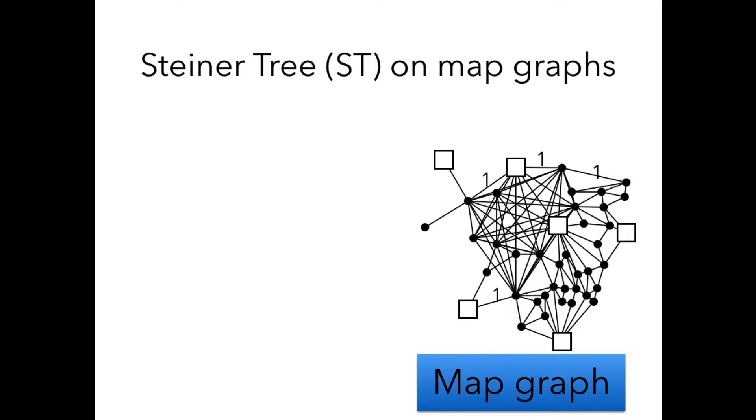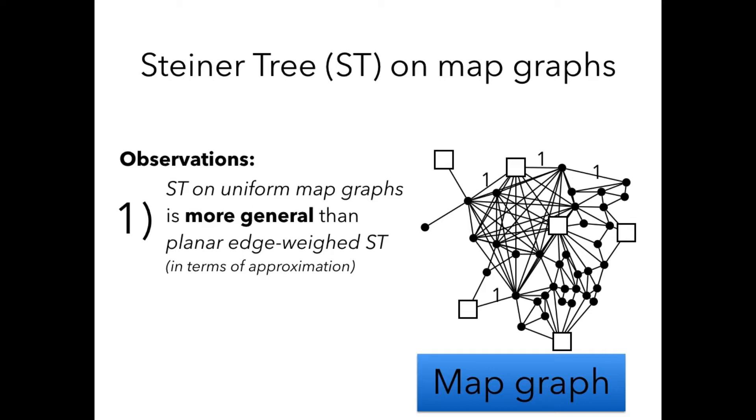We study Steiner tree problems on map graphs, and it makes sense to study them only on uniform graphs, where every edge has cost one, because otherwise, if you allow any edge weights, then it turns out that this problem is as difficult as Steiner tree on general graphs. The uniform case is still interesting, because it captures planar edge-weighted Steiner tree problem. This is indeed a generalization of planar graphs. Also, it turns out that map graphs, the Steiner tree on map graphs, is a special case of node-weighted Steiner tree on planar graphs, which is the problem we were interested in in the first place.